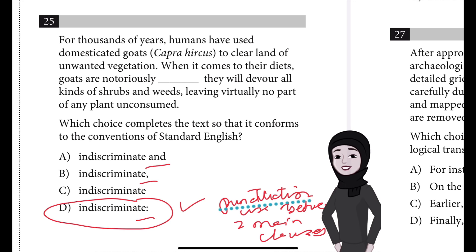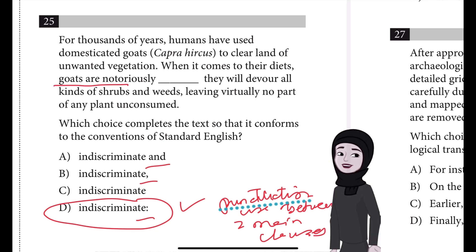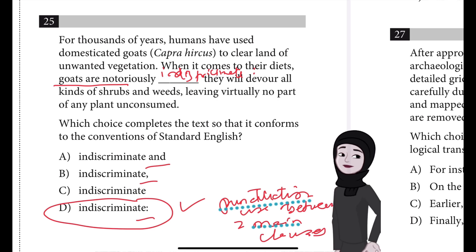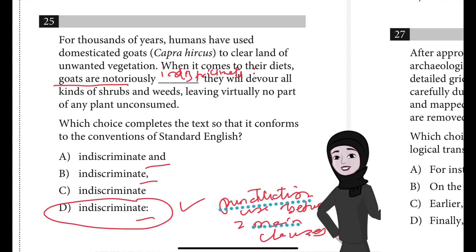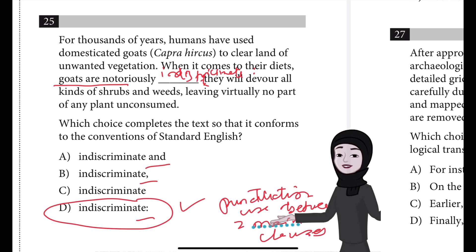In choice D, a colon is used correctly to mark the boundary between one main clause — which runs from 'goats are notoriously' up to 'indiscriminate' — and then the colon introduces the following explanation of goats' non-discriminatory behavior when it comes to what they eat: 'they will devour all kinds of shrubs and weeds, leaving virtually no part of any plant unconsumed.'